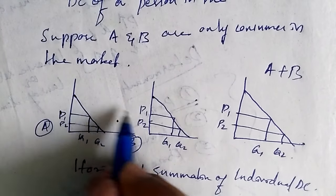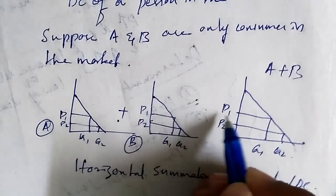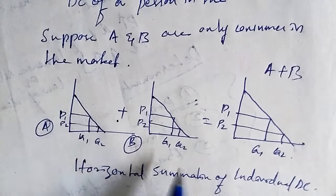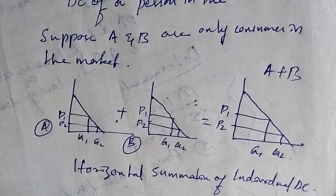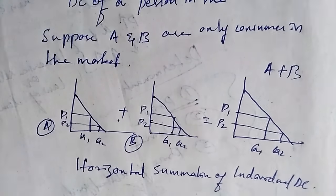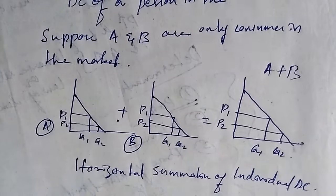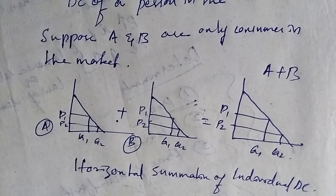individual demand curves. That means when you add A plus B, you will get market demand curve. This is how we arrived, and I hope you understood what is demand curve, and individual demand and market demand. Thank you, thanks for watching.